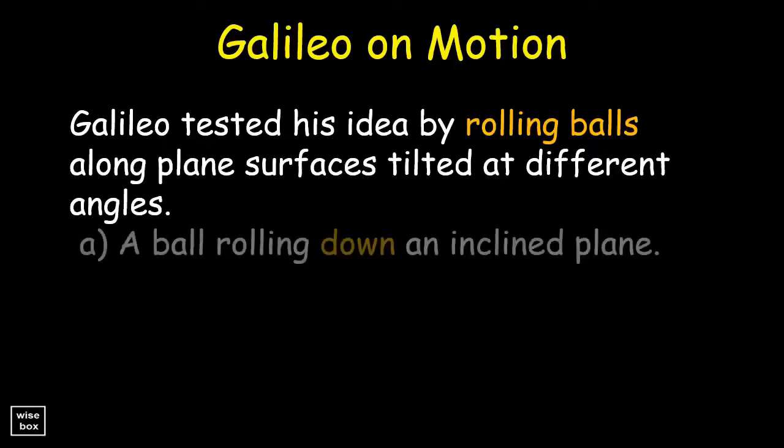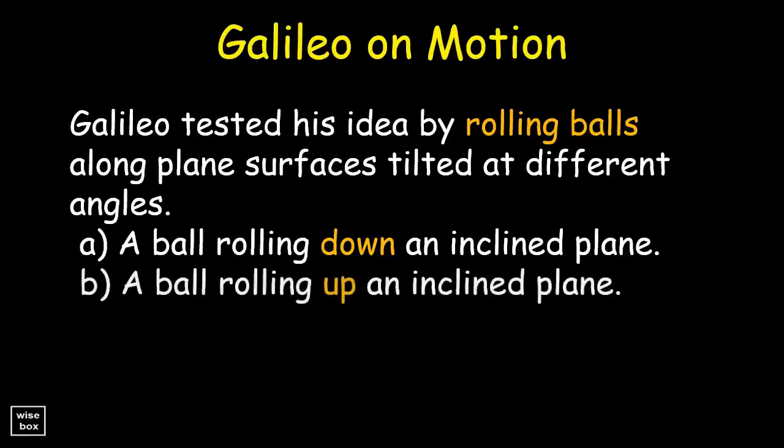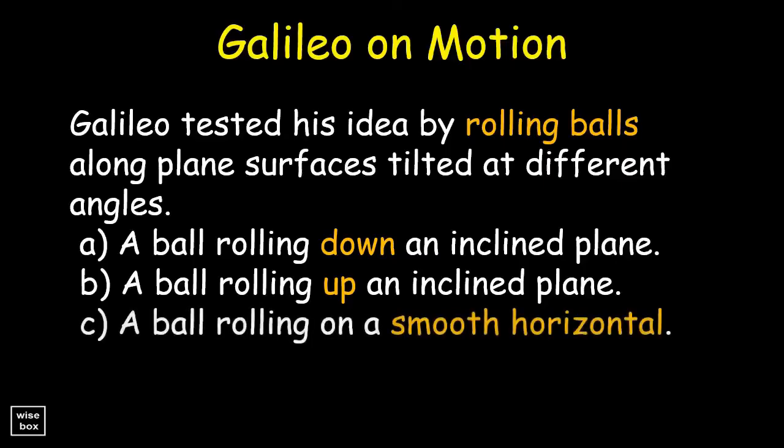First, it's a ball rolling down an inclined plane. Second, a ball rolling up an inclined plane. Then, a ball rolling on a smooth horizontal.